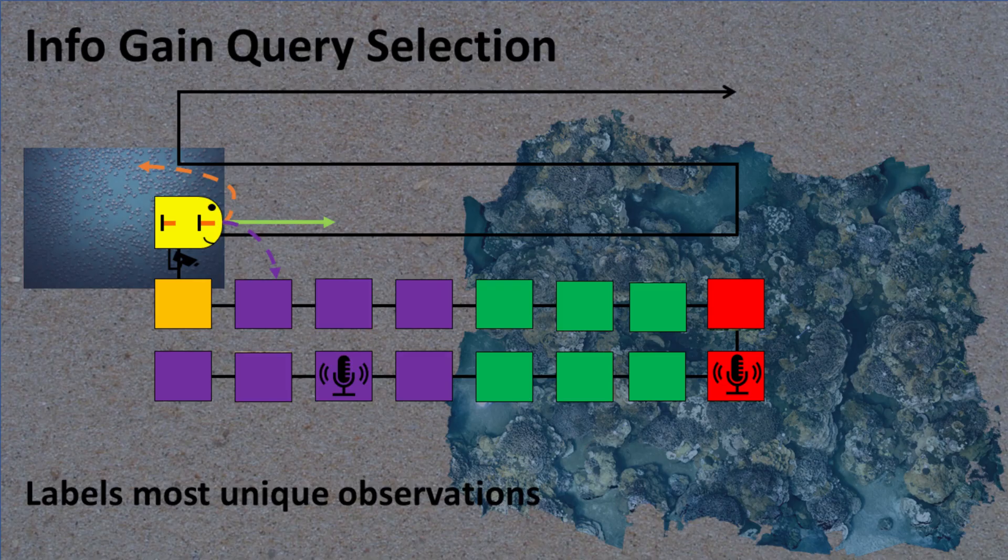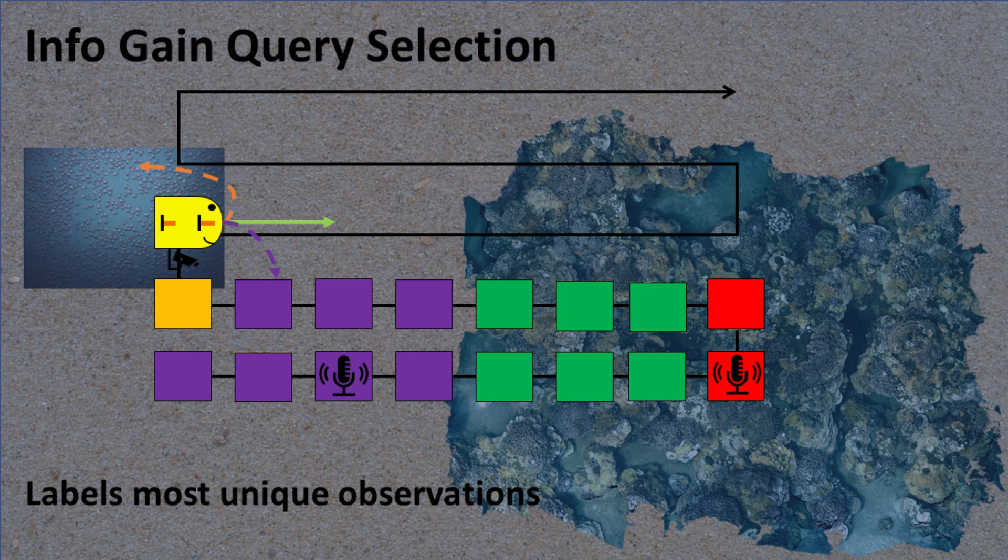The third approach, and the focus of most prior research, is to use an information gain technique. This would have the robot send back the image which it is most uncertain about for labeling. For example, based on the robot's current observations,